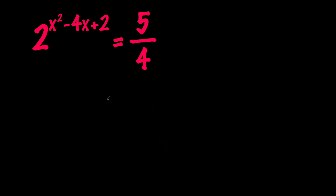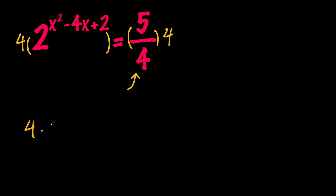Now, first of all, let's go ahead and multiply both sides by 4 to get rid of the 4 in the denominator on the right-hand side. So we're going to have 4 times 2 to the power of x squared minus 4x plus 2 equals 5.